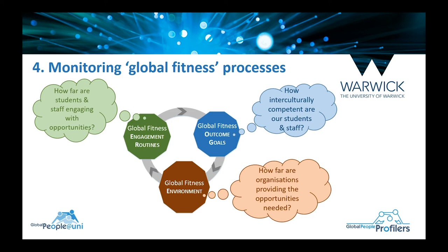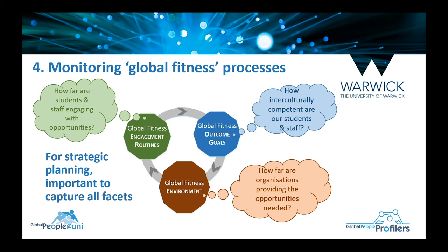How then can all this be monitored? All have responsibility. Organisations need to think how far they are providing the stretch opportunities that students and staff need. Students and staff in turn need to think how far they are engaging with those opportunities. And then the third question: how interculturally competent are our students and staff? Just measuring one of those won't actually show the whole picture, so it's important to measure all of them. For strategic planning, we must capture all those facets.